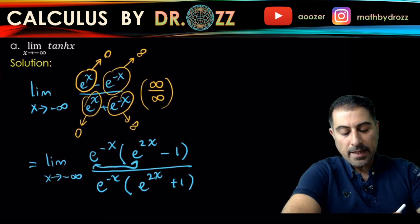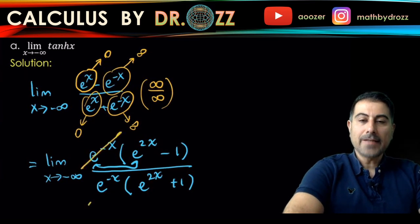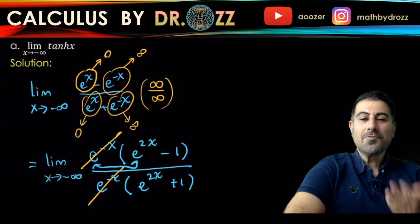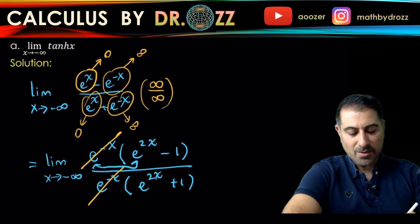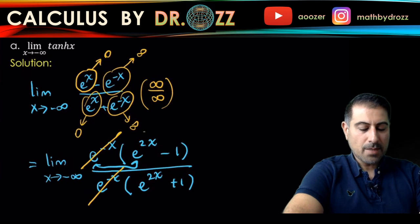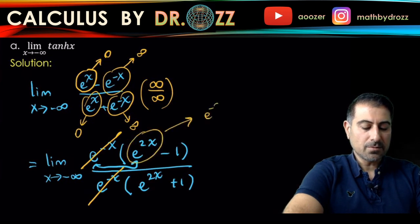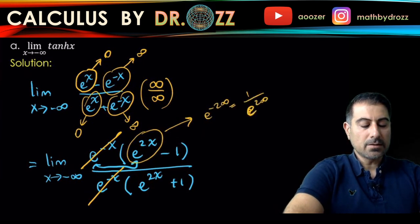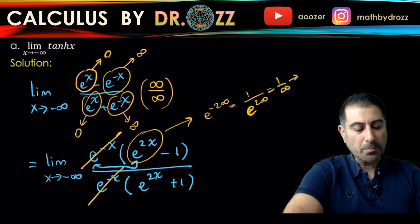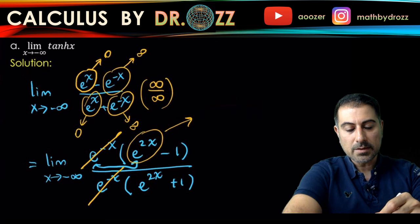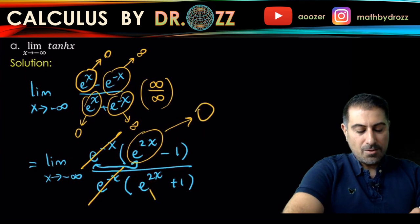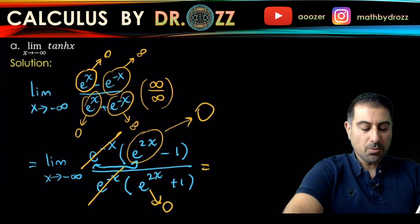So this way I can cancel out e to the minus x's, and I do know that e to the 2x at the top and the bottom will approach zero because they are like e to minus two times infinity. So this is almost like e to the minus two times infinity, so one over infinity tends to zero. So this term is approaching zero, and so is this term. So in total you have the whole limit to be exactly equal to negative one.